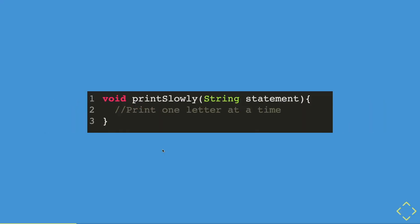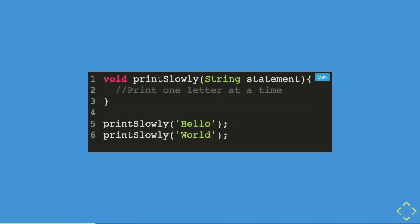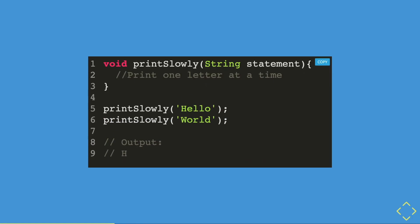In terms of coding, imagine there's a print statement that will only print one letter at a time — let's call it print slowly. Then you have two print statements printing at the same time. However, the output will be a little bit disastrous because the print statement will only print at the same line.